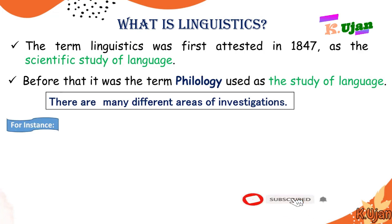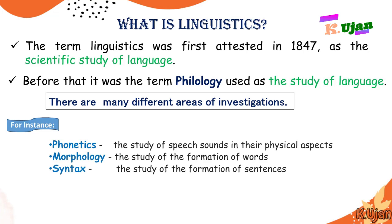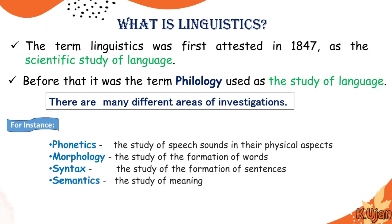There are many different areas of investigation within the subject of linguistics. First, phonetics — the study of speech sounds in their physical aspects. Second, morphology — the study of the formation of words, how words are formed in a language. Third, syntax — the study of the formation of sentences, how sentences are formed. Fourth, semantics — the study of meaning. These are the core areas of linguistics.